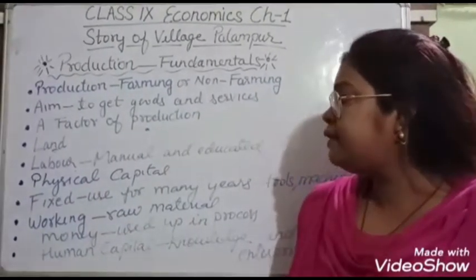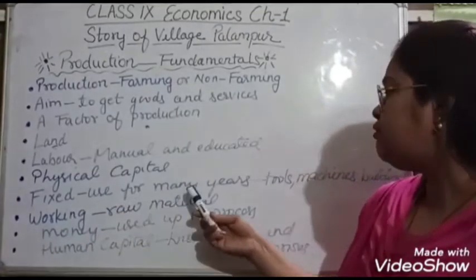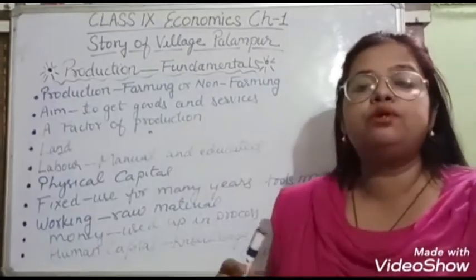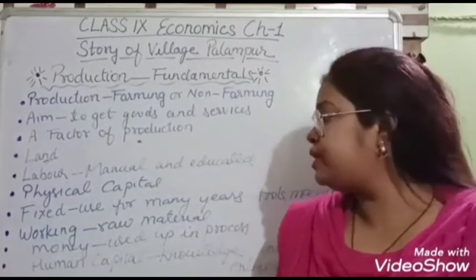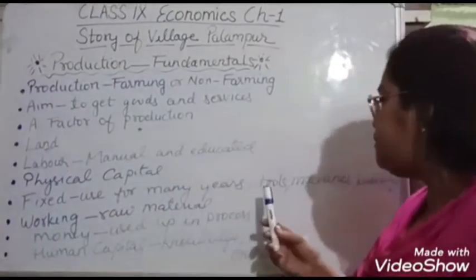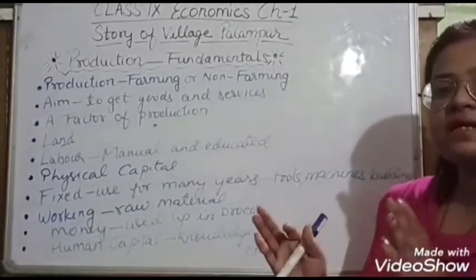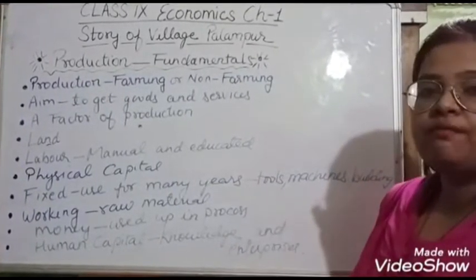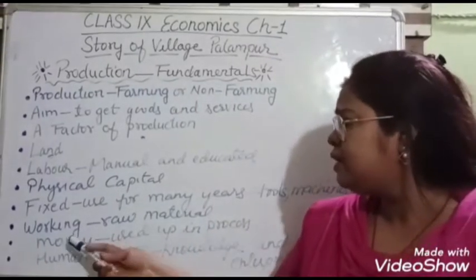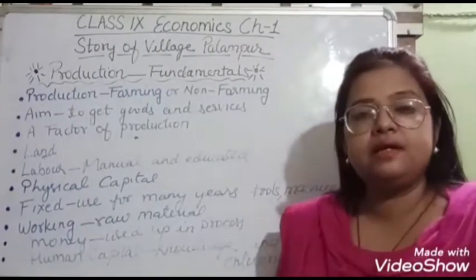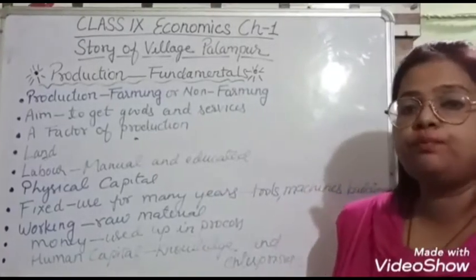Physical capital can be money, knowledge, skill, or experience. It can be used for many years and can generate profit — it can also increase. Fixed capital includes tools, machinery, buildings, and factories. These are fixed investments when establishing a factory or industry. Working capital includes raw material, which also falls under physical capital. Raw material from which goods are manufactured or produced is very important. Money used up in the process also plays a very important and crucial role in starting up a business, farming, or any non-farming activity.